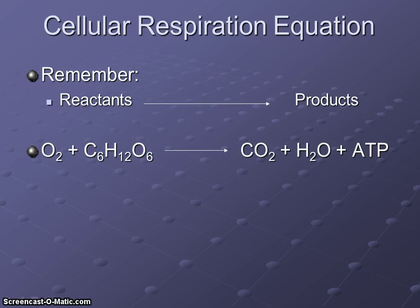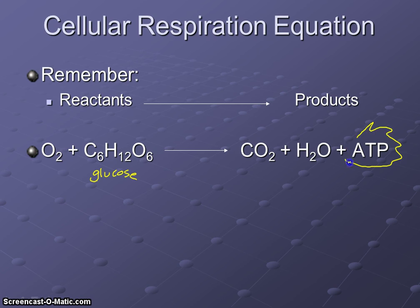Our cellular respiration equation looks like this — make sure you write this down. Our reactants are oxygen plus glucose, which yields carbon dioxide, water, and ATP. Remember, glucose is that ring structure from our biochemistry chapter — that's what all the carbs looked like. ATP is the main product and the whole point of doing this. Carbon dioxide and water are byproducts: we breathe the CO2 right out, our bodies reuse the water, and this is why we need to breathe.